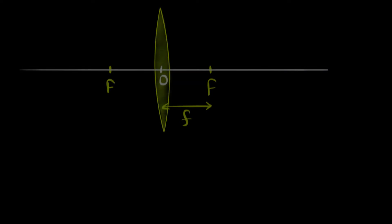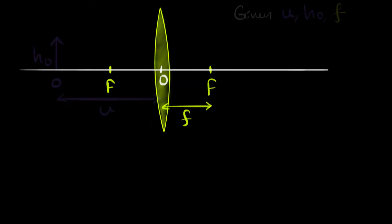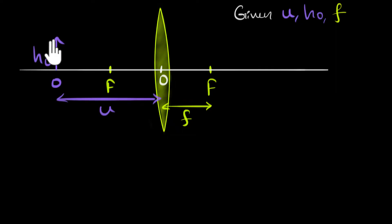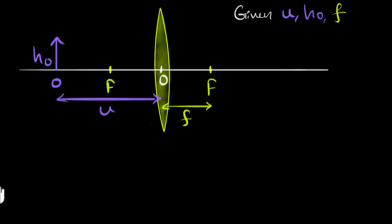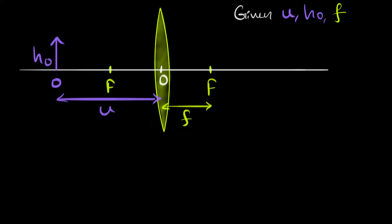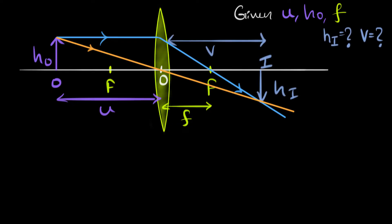Say we have a thin convex lens of focal length f and an object of some height h0 is kept at some distance u from the lens. Say we know these values — the focal length, u, and h0. The question is: can we figure out where the image is going to be exactly, and what will be the height of the image? So the goal is to figure out the height of that image and how far the image is formed from the lens.